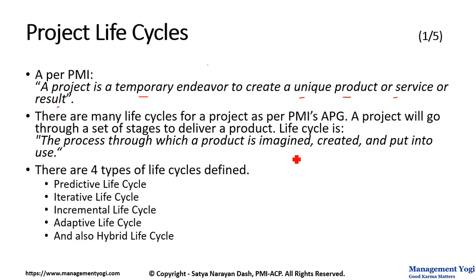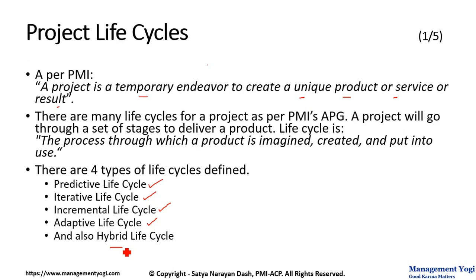There are four types of life cycles defined for a project: Predictive Life Cycle, Iterative Life Cycle, Incremental Life Cycle, and Adaptive or Agile Life Cycle. In addition, we have another life cycle called Hybrid Life Cycle, which sits in between Predictive and Adaptive or Agile Life Cycle.